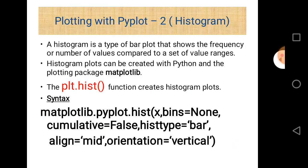Histogram is a type of bar plot that shows the frequency of numbers of values compared to a set of value ranges. Histogram plots can be created with Python and the plotting package Matplotlib. Histogram is basically similar to the bar chart, but the only difference is that Histogram contains a set of data.